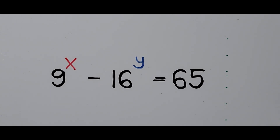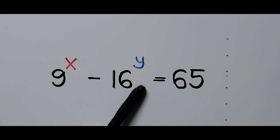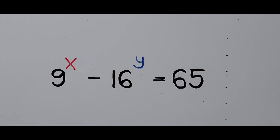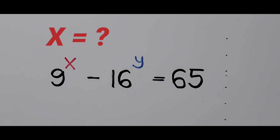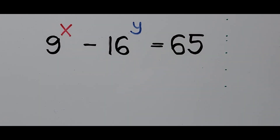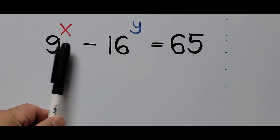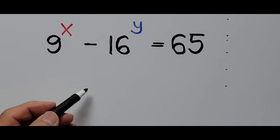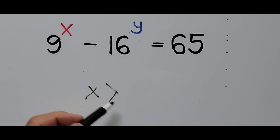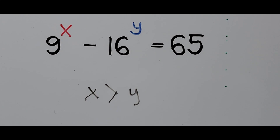Hello everyone, we have an exponential equation on the board: 9 to the power of X minus 16 to the power of Y equals 65. In this equation we're going to solve for those two variables X and Y. The condition is that X must be greater than Y.